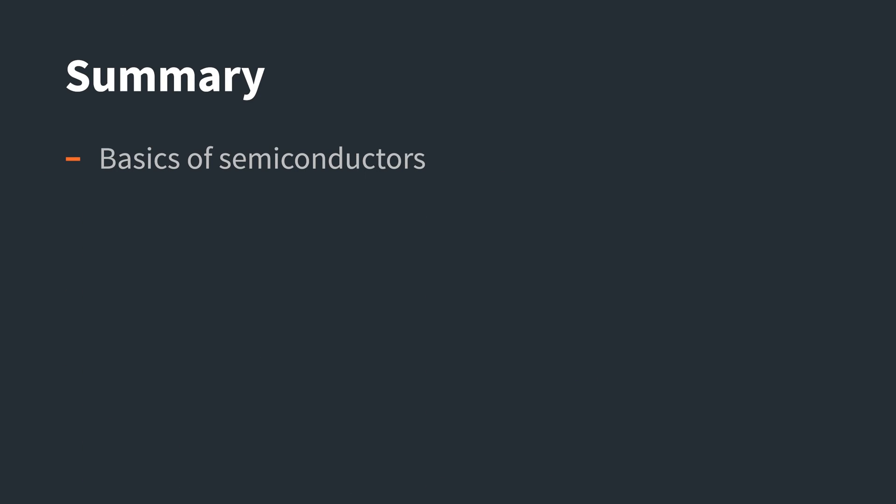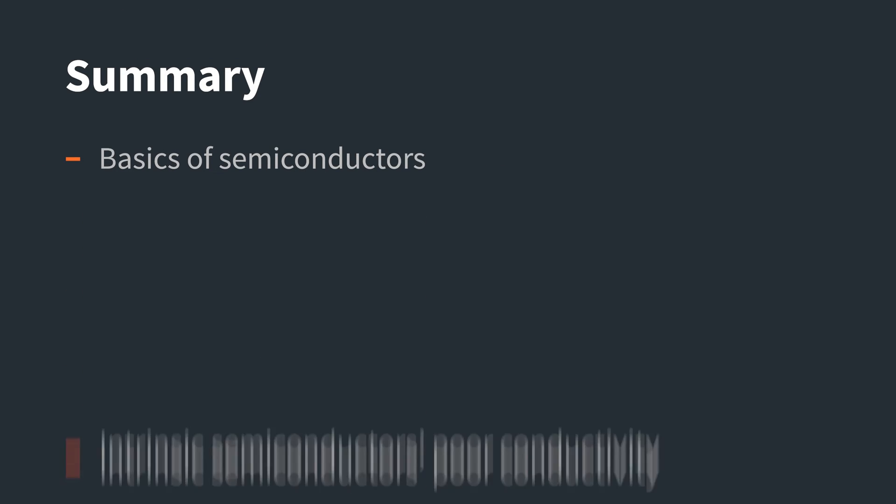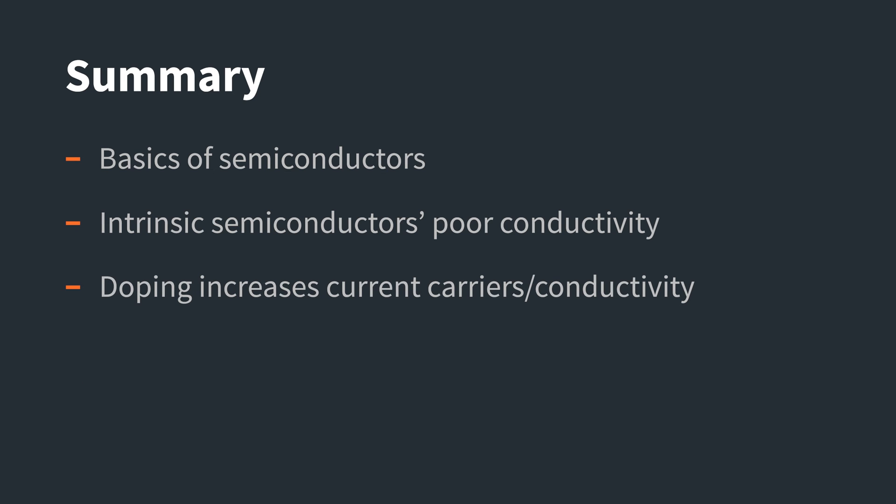In this video, we talked about the basics of semiconductors, the intrinsic semiconductor and its poor conductivity, how doping increases the number of current carriers in a semiconductor material and improves its conductivity. We also briefly mentioned how different semiconductor devices were created based on the P-N junction. If you have any questions, leave them in the comments below, and if you found this interesting or helpful, please subscribe to our channel and like this video.